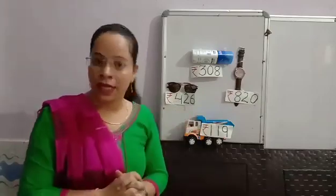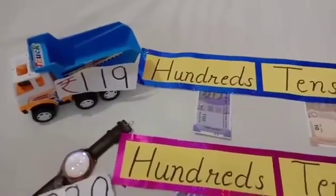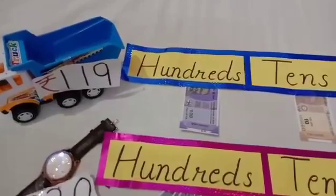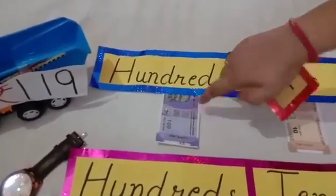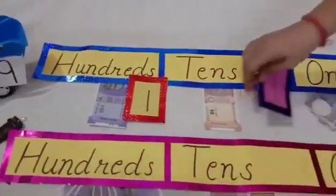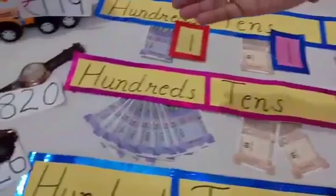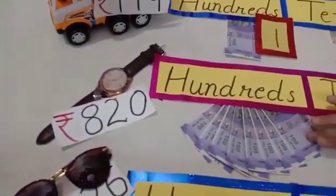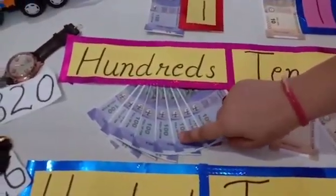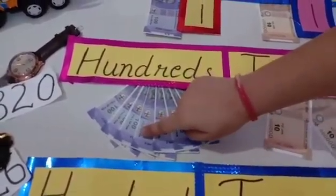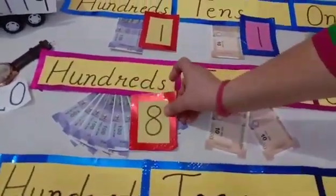Now we will find which is the costliest one and which is the cheapest one. Tell me students, how many notes we have given for a truck? We have given a single Rs. 100 note — so we have Rs. 100, 1 tenth, and 9 ones. And for the wristwatch, see how many notes of Rs. 100 we have given to the shopkeeper: 100, 200, 300, 400, 500, 600, 700, and 800. So there are 8 hundreds, 2 tens, and 0 ones.